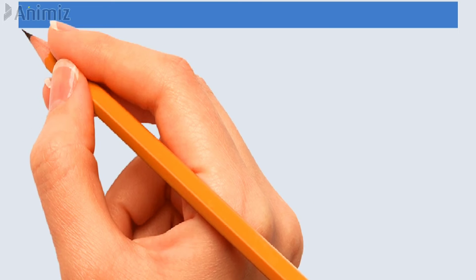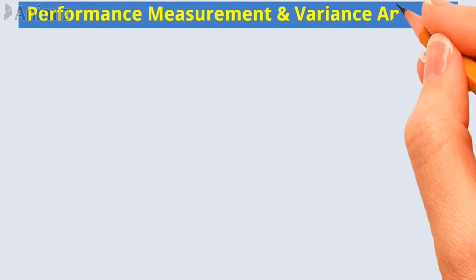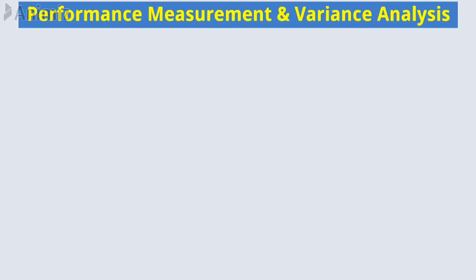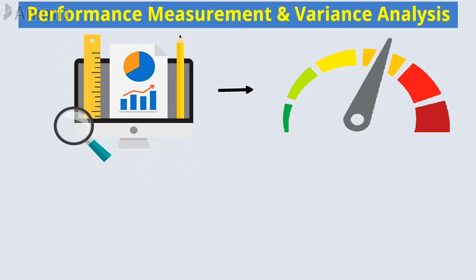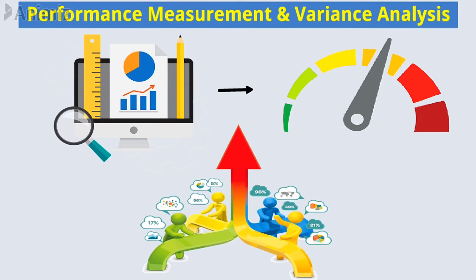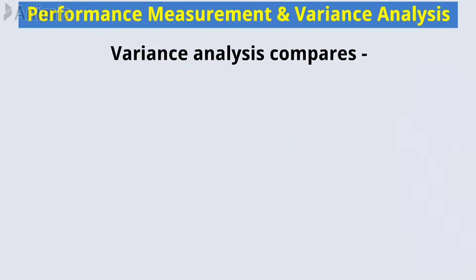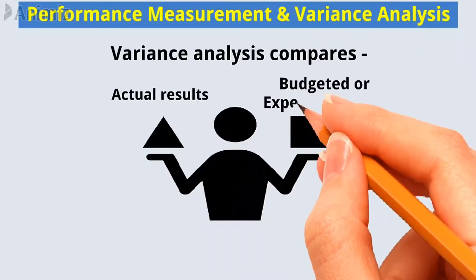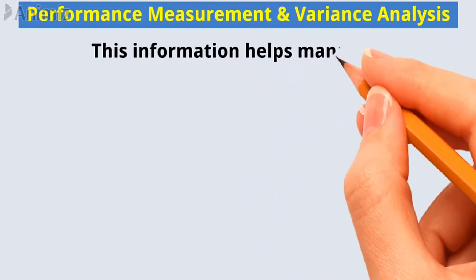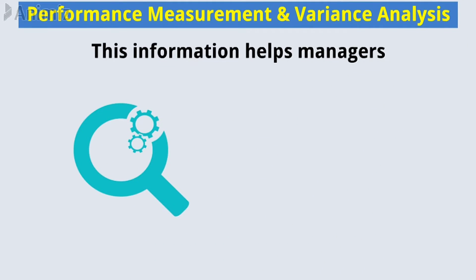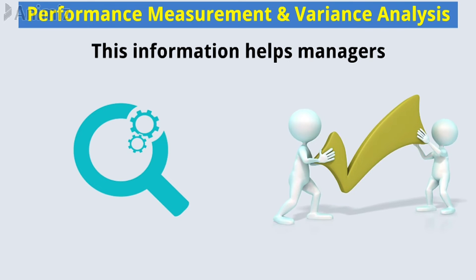Number 3: Performance Measurement and Variance Analysis. Managerial accountants employ performance measurement techniques to assess the organization's performance and identify areas for improvement. Variance Analysis compares actual results with budgeted or expected results, highlighting any deviations. This information helps managers pinpoint the root causes of discrepancies and take corrective actions.